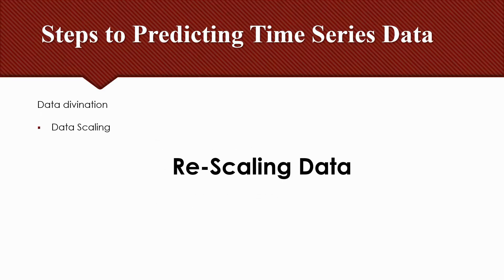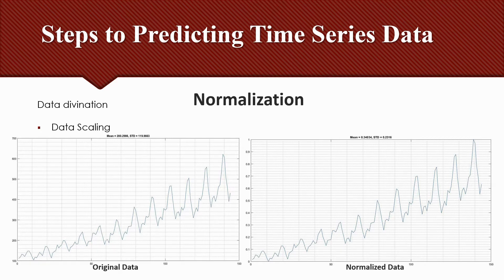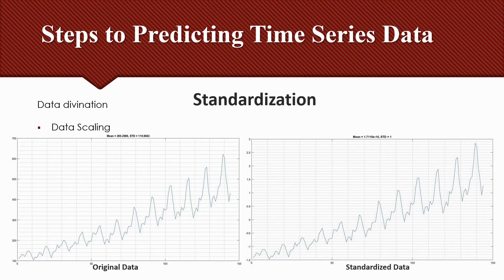Scaling time-series data: some machine learning algorithms will achieve better performance if your time-series data has a consistent scale or distribution. After splitting data into test and train sets, it is better to rescale to a new scale. Two common techniques you can use to consistently rescale your time-series data are normalization and standardization. Normalization is a scaling technique in which values are shifted and rescaled so that they end up ranging between 0 and 1. It is also known as min-max scaling.